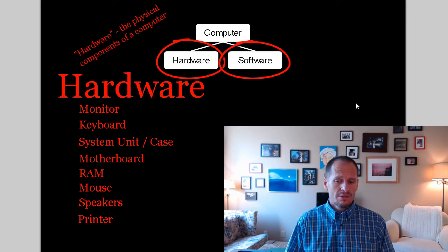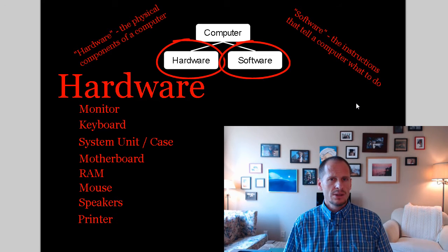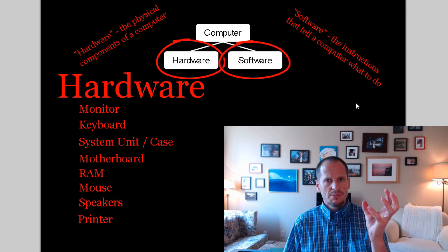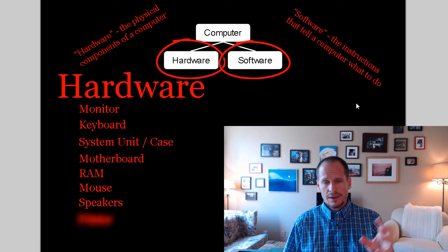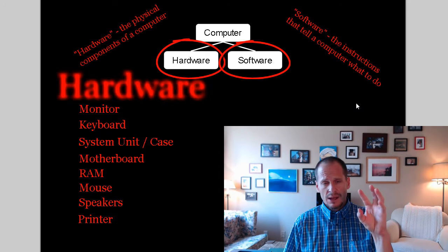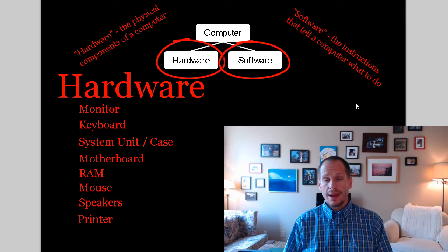Software, on the other hand, is all of the instructions. The most basic way we can think about software is that software is all of the instructions that tell a computer what to do. So hardware is the physical componentry — all of the circuits and the switches and everything else, the keyboard, the monitor, the mouse, the speakers, the printer. That's all the physical componentry, and the software tells that physical componentry what to do — which switches to go on and off and how to work.